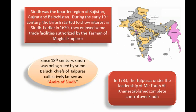If you look at the map, Punjab is the region that the British had under control. The target on the map was Sindh.